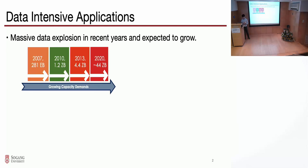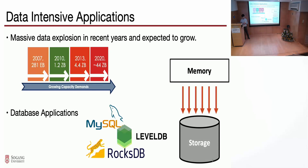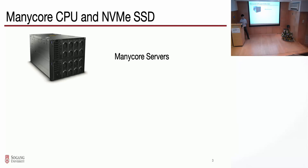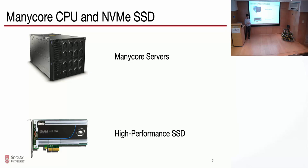Data is growing as time goes, so we can expect that there's a lot of data to process and store. In database applications, they utilize parallel writes to serve that massive amount of data and provide high performance. We can think of many-core servers as CPU technology evolves — in a single server, we can get a lot of parallelism. We can also think of high-performance SSDs, which can provide high throughput and high parallelism in a single device.